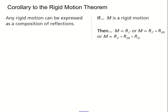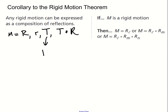There is a corollary to the Rigid Motion Theorem: any rigid motion can be expressed as a composition of reflections. We know a rigid motion can be expressed as a reflection, a rotation, a translation, or a glide reflection. In a previous lesson, we showed that a translation can be considered a composition of two reflections, as long as those two reflection lines are parallel.